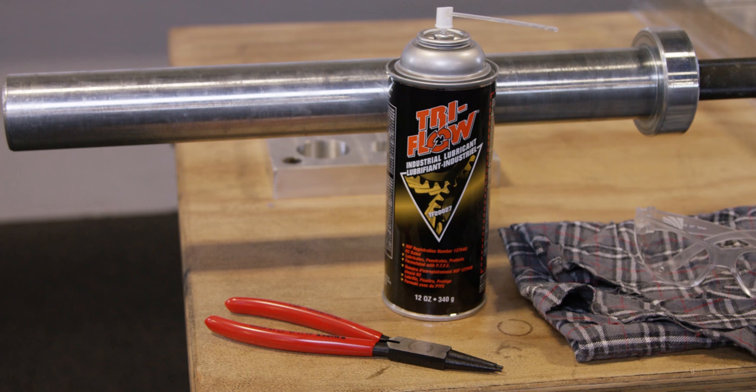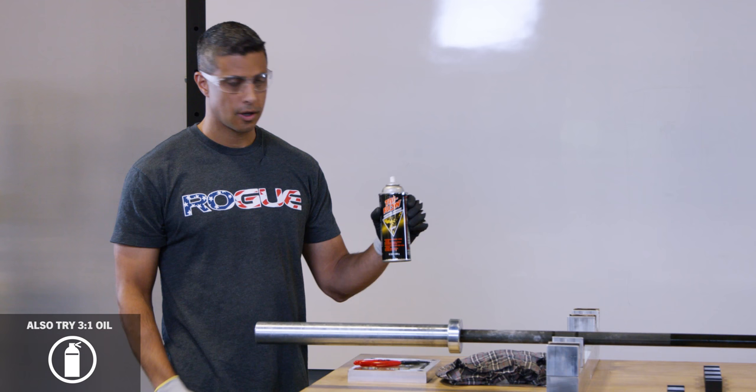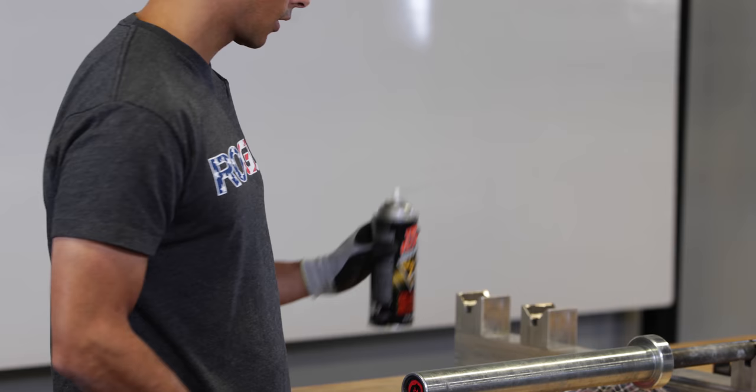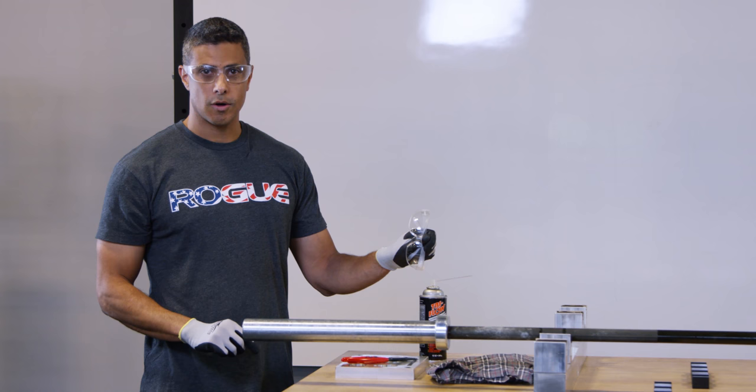To do that, you're going to need a few tools. First, a good set of snap ring pliers. Second, tri-flow lubricant, which can be found at most hardware stores and most bike shops. Third, a rag, and fourth and most importantly, a pair of safety glasses.